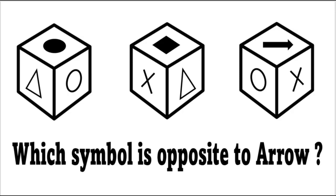In this puzzle the question is which symbol is opposite to the arrow. So the arrow is here. Which symbol is opposite means from the downward side of this dice.